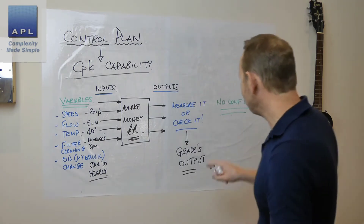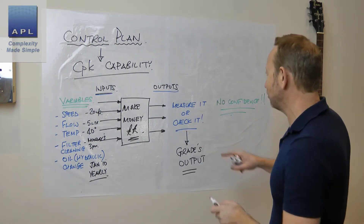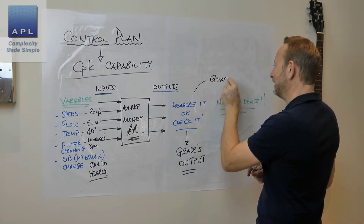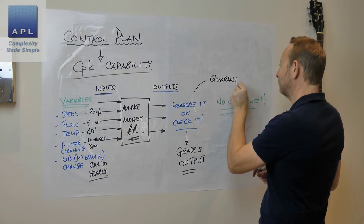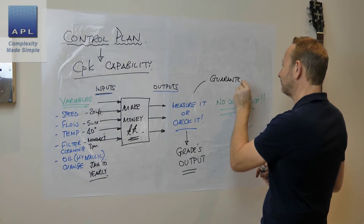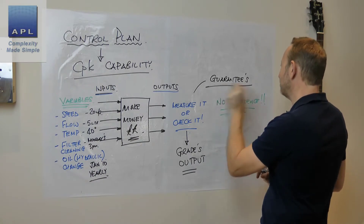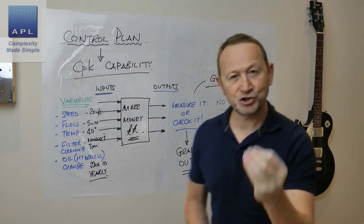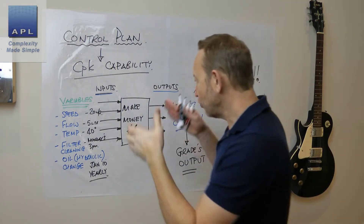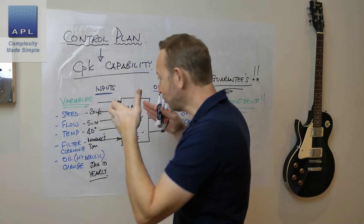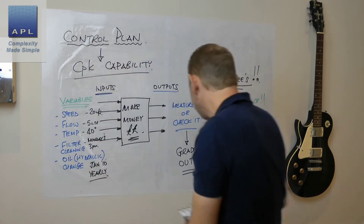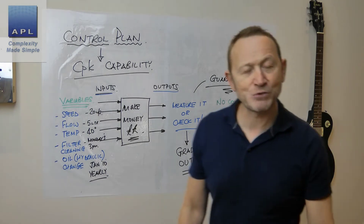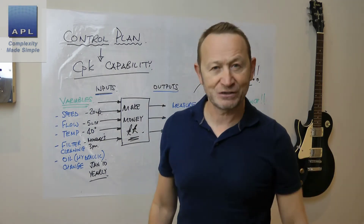What a control plan does is it doesn't measure or check — it guarantees the output. That's a true control plan. It shows process knowledge. You understand your process so well that if you fix those five things, all your customers will be happy. That's control — now you have the process under control.